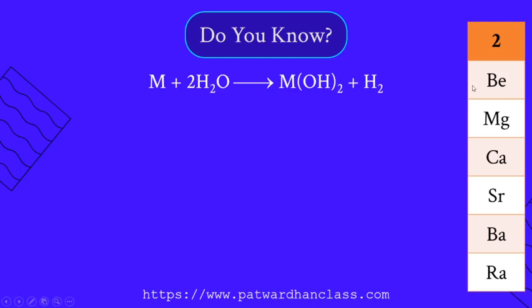What elements are there in Group 2? Beryllium, magnesium, calcium, strontium, barium, and radium.